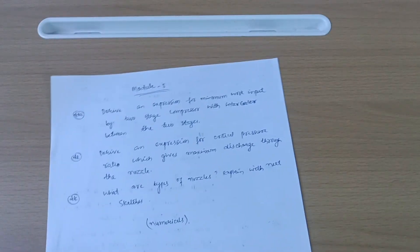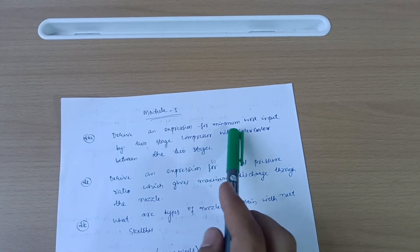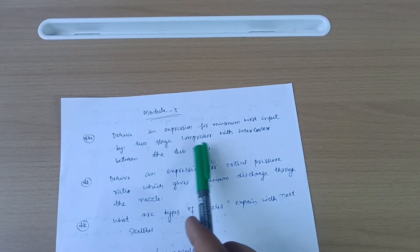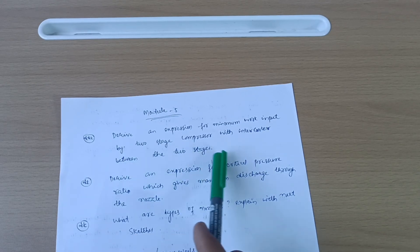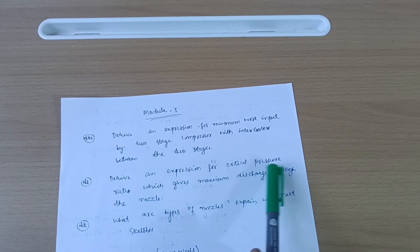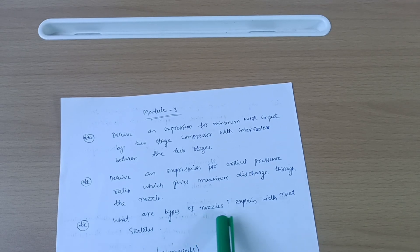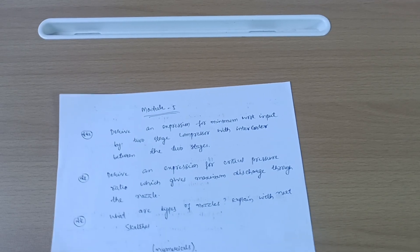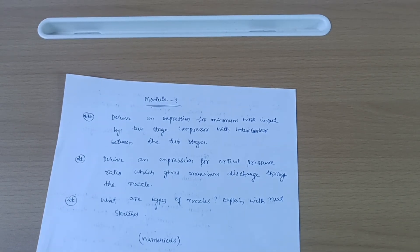Now last is Module 5. Derive an expression for minimum work input by two-stage compressor with intercooler between the two stages. Derive an expression for critical pressure ratio which gives maximum discharge through the nozzle. What are types of nozzles? Explain with neat sketch. These are all theoretical questions which I discussed in this video.